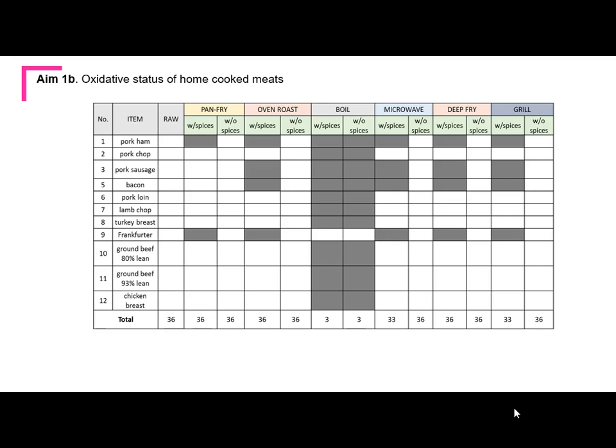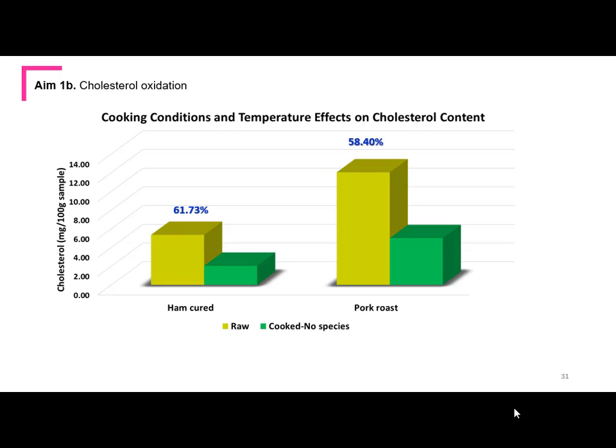This is our matrix that we are following to mimic home-cooked meats. We did not discriminate between organic and non-organic products. We found that cooking with different temperatures and methods causes significant oxidation — for example, cured ham has been oxidized almost 61%. This is the cholesterol content originally in the raw material — after cooking it has been reduced, meaning this cholesterol has been converted to COPs. The oxidation is around 61%. Another example is pork roast — the original cholesterol amount is reduced after the cooking method, forming new species of cholesterol oxidation products.